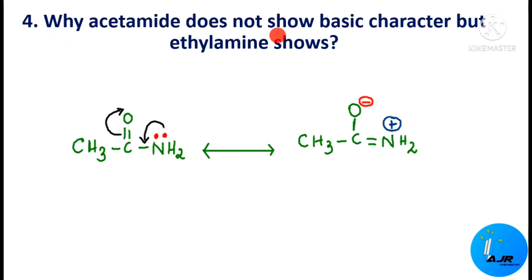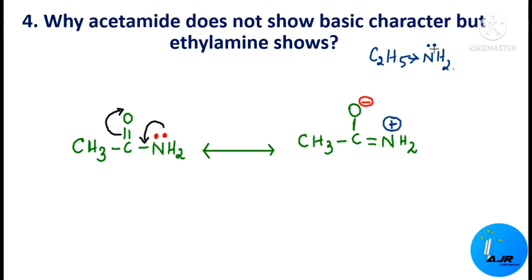The next important question: why does acetamide not show basic character but ethylamine does? The structure of acetamide is given here. Ethylamine is C₂H₅NH₂. In the case of ethylamine, the ethyl group is an electron-releasing group, so it can release electrons to the nitrogen. There will be a lone pair of electrons on the nitrogen, and since the ethyl group is releasing electrons, the nitrogen will have more electrons which can be easily donated. So basicity will be more in the case of ethylamine.